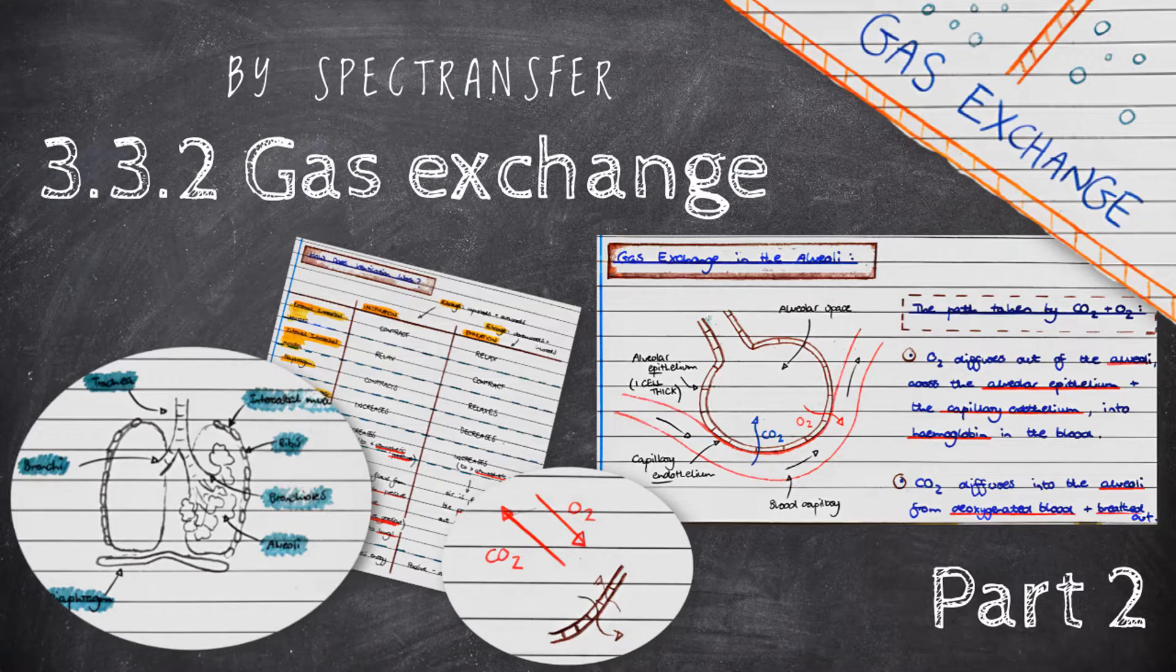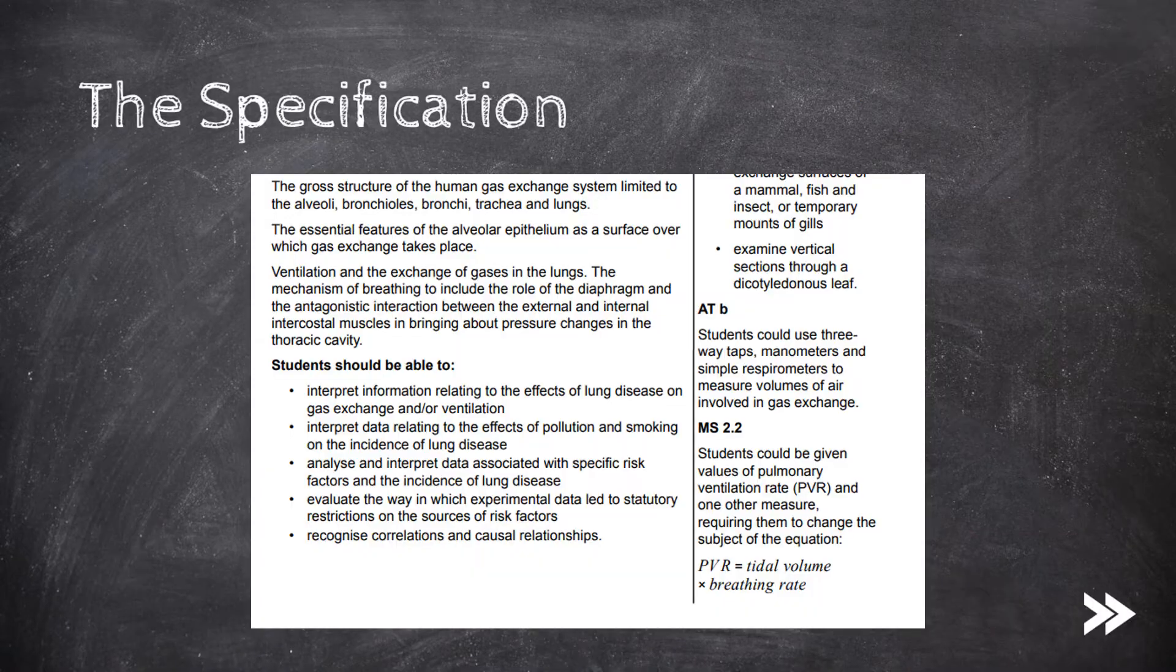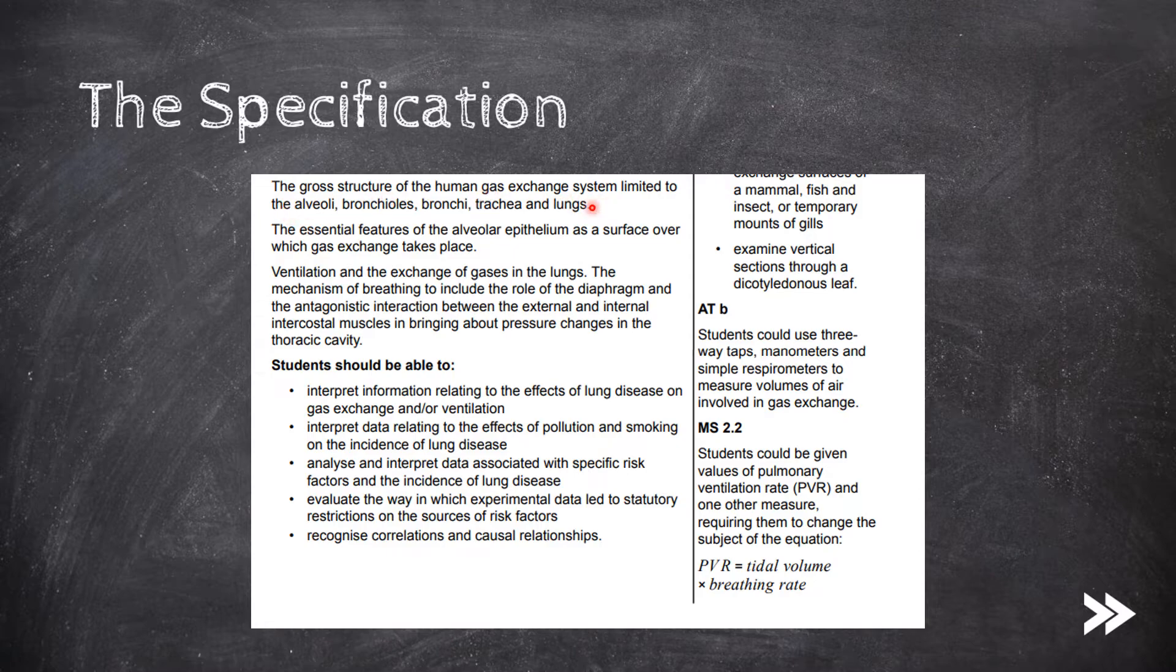To watch part 1, just follow the link top right. So let's continue where we left off in part 1. In this video we'll cover the structure of the human gas exchange system as well as the essential features of the alveolar epithelium and how it is adapted for efficient gas exchange. We'll also look at the antagonistic interaction between the external and internal intercostal muscles as well as the role of the diaphragm in facilitating ventilation. And finally, we'll also consider the effects of lung disease on gas exchange.